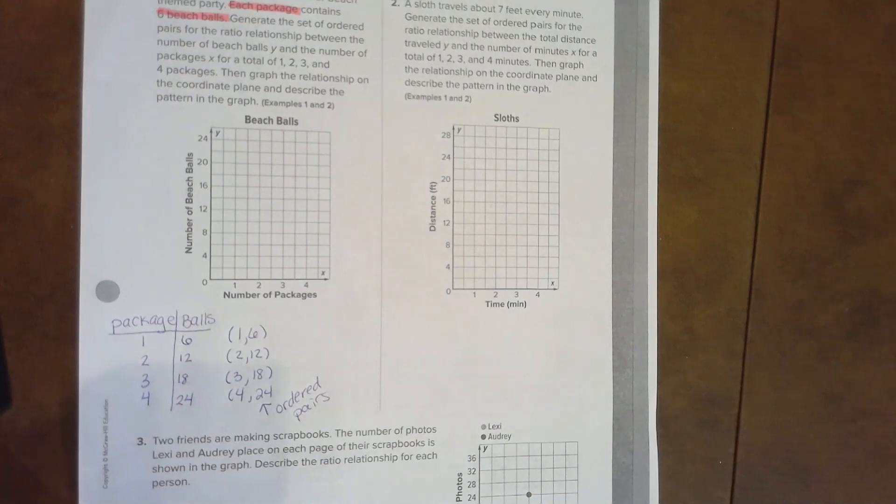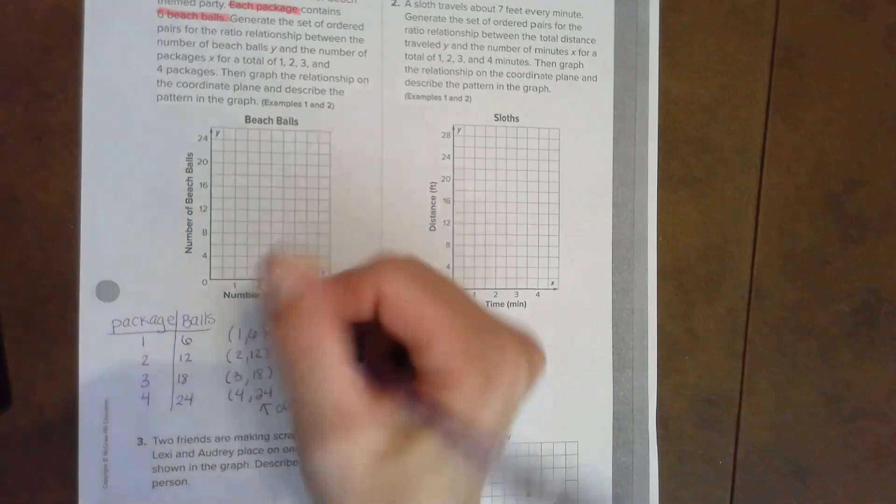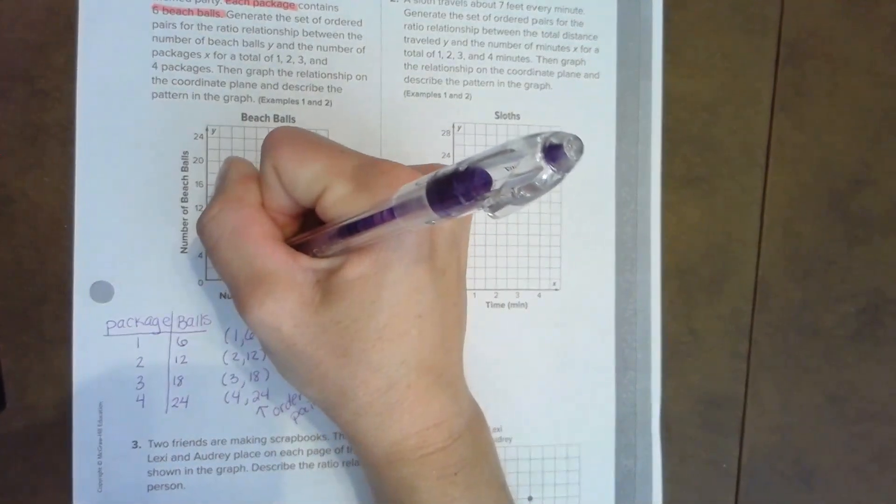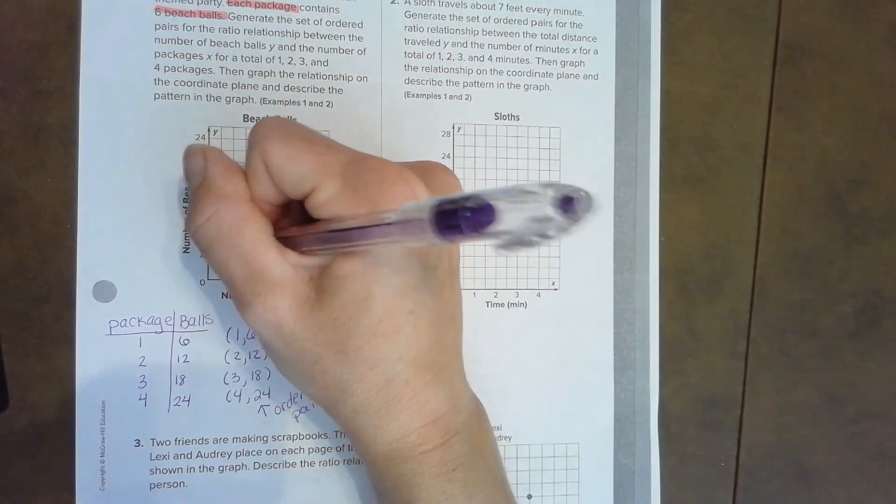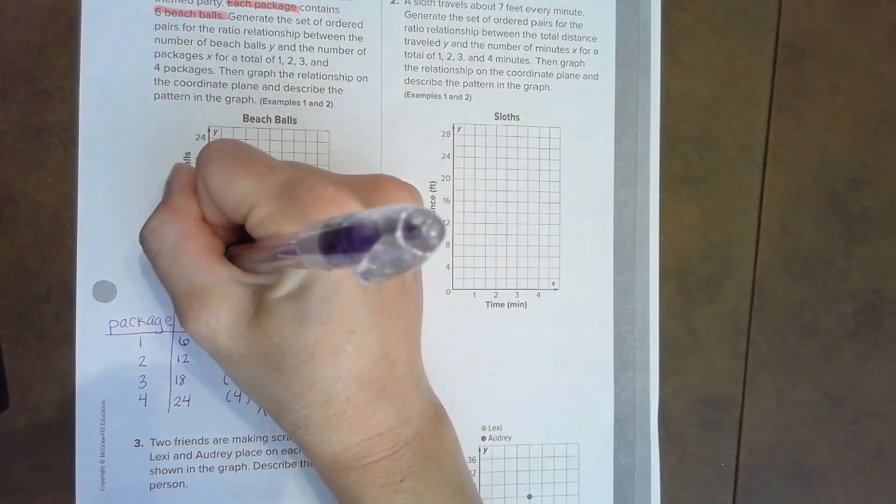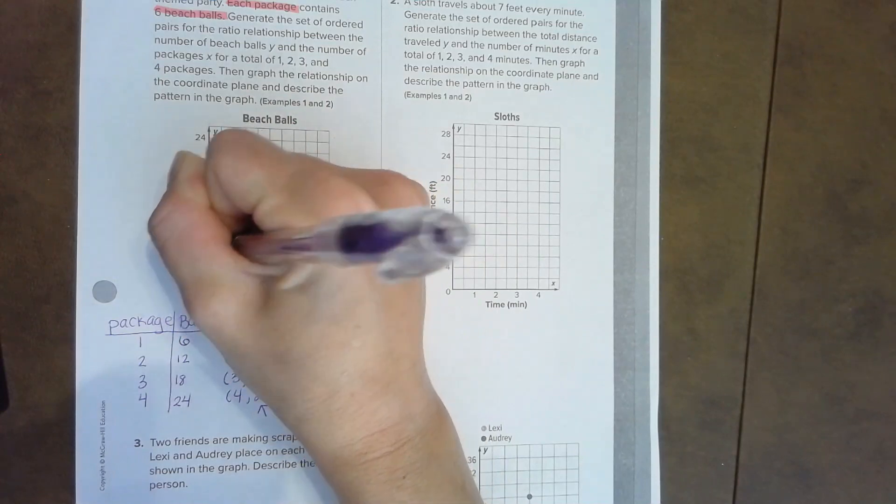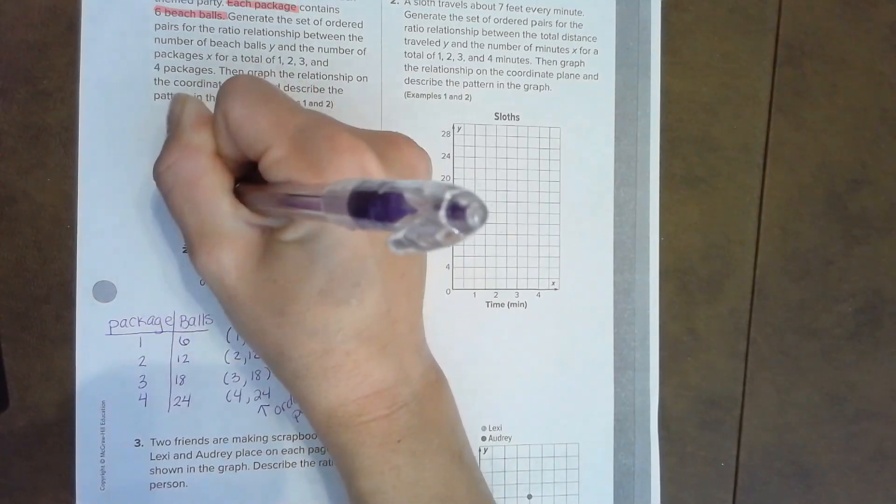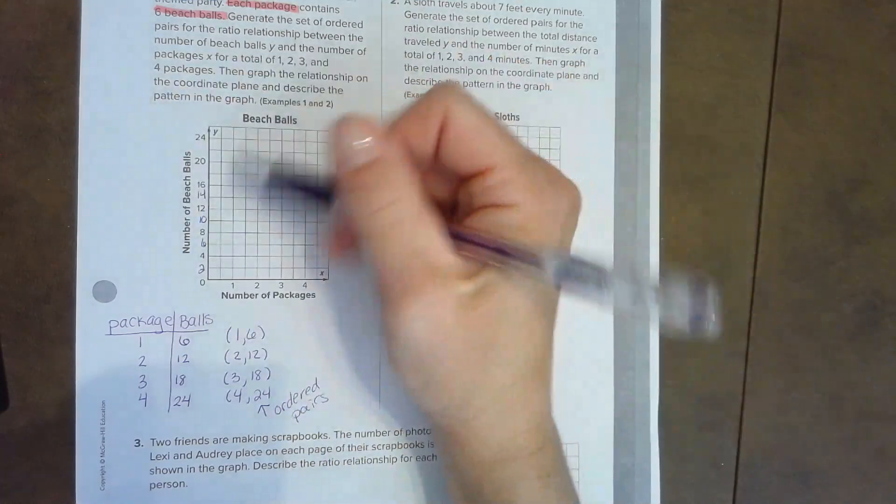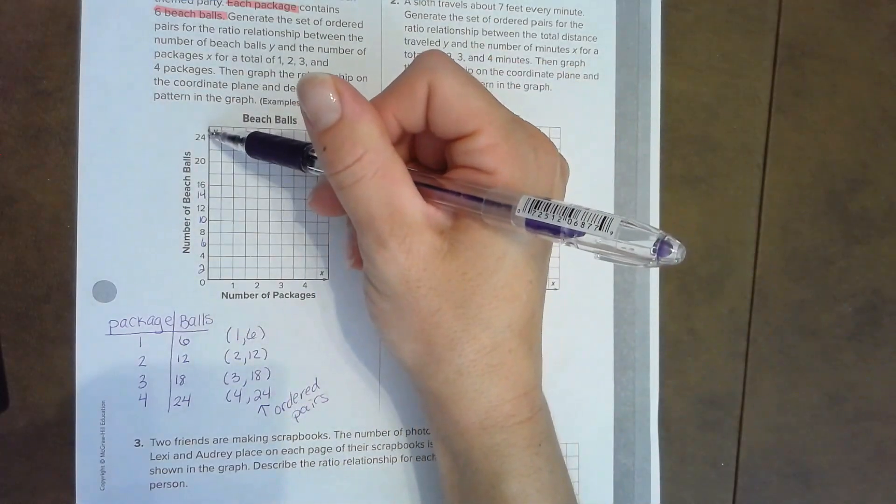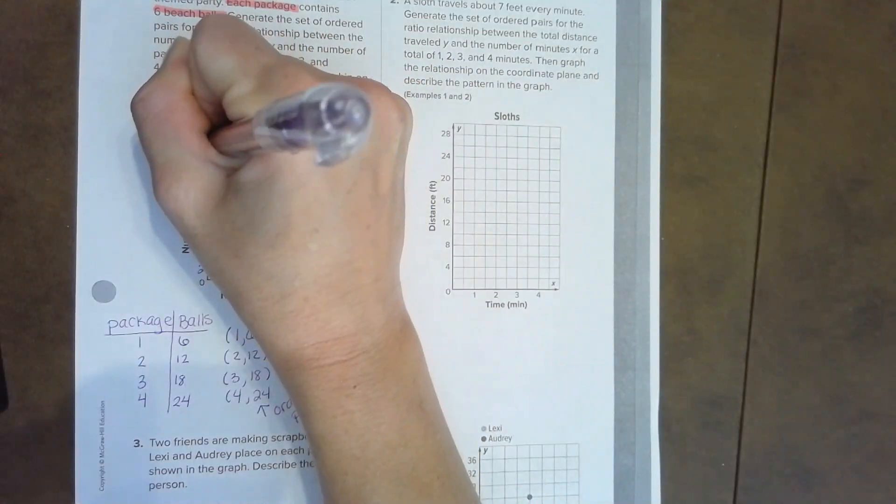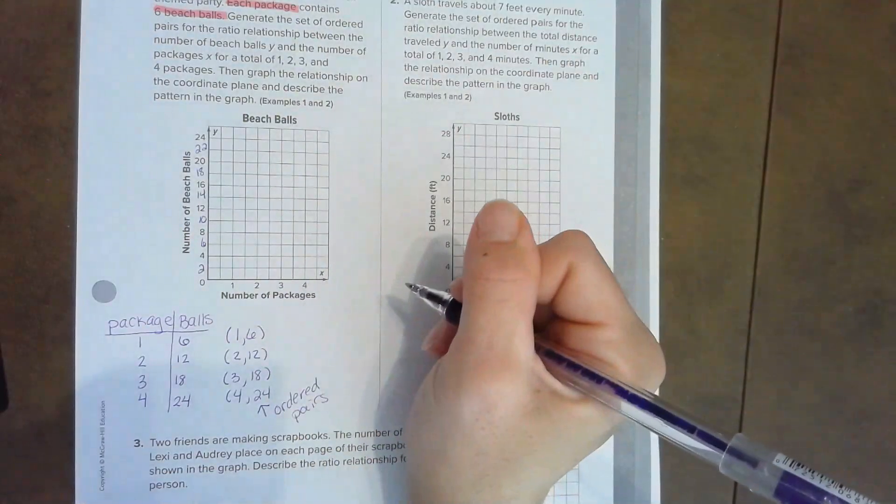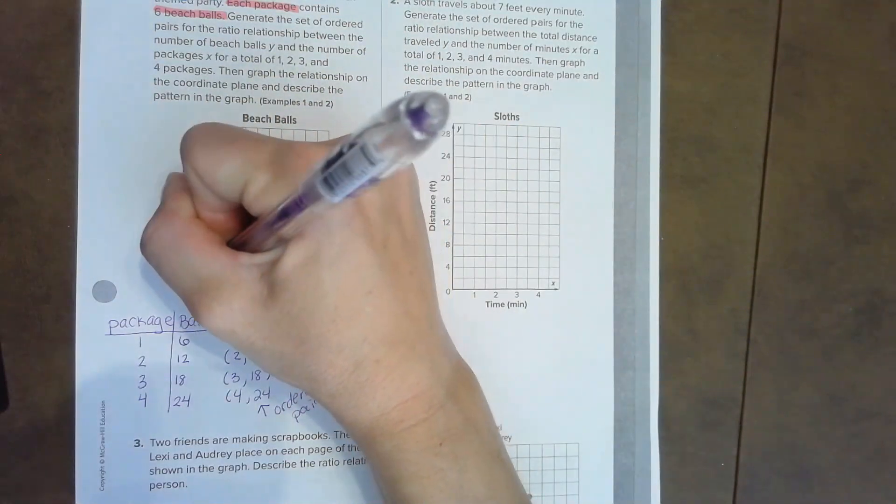Now we're ready to graph them. They already have the graph nicely set up for us: number of packages, number of beach balls. In one package there are six balls. I don't see a six on here, maybe it isn't just counting by fours. I wonder if it's counting by twos: two, four, six, eight, and that works. Ten, twelve, fourteen. Maybe slide a couple extra numbers in here to help you out.